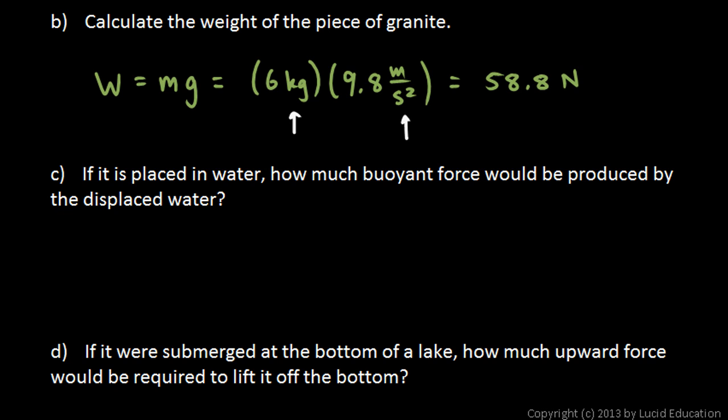So we have to ask ourselves, how much water is displaced? And that question deals with the volume of the rock. It displaces 2,300 cubic centimeters of water. Because that's the volume of this block of granite. So 2,300 cubic centimeters of water. And remember that 1 cubic centimeter of water has a mass of 1 gram. So this is 2,300 grams of water is displaced. And that's pretty easy to write in kilograms. 2,300 grams is 2.3 kilograms. So that's the amount of water displaced.